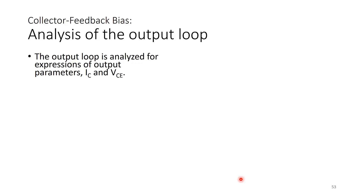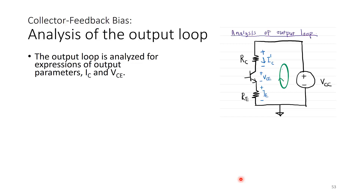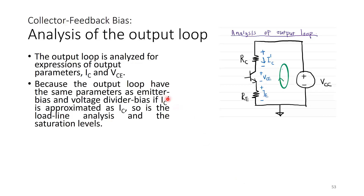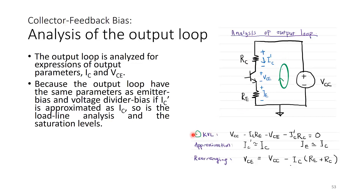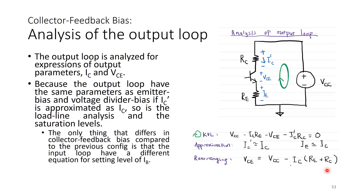The output loop analysis is the same as for emitter bias and voltage divider bias. With IC′ approximated as IC, the KVL gives: VCC − IERE − VCE − IC′RC = 0. Approximating IC′ = IC and IE ≈ IC, we rearrange to: VCE = VCC − IC(RE + RC). The only difference in collector feedback bias versus previous configurations is the input loop equation for IB, which now includes RF, RC, RE, and beta.